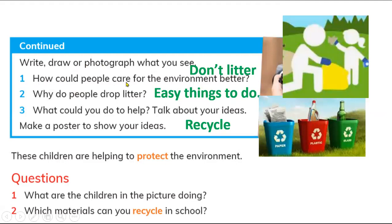One: how could people care for the environment better? Simple — don't litter, just use the bin. Two: why do people drop litter? Because they think it is a very easy thing to do — they don't look around to find the garbage bin, so they just throw it anywhere. Three: what could you do to help? You have to recycle things in the bin.